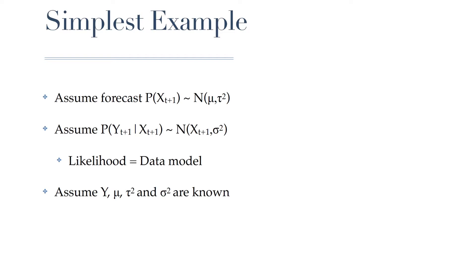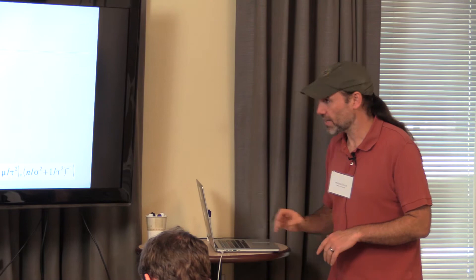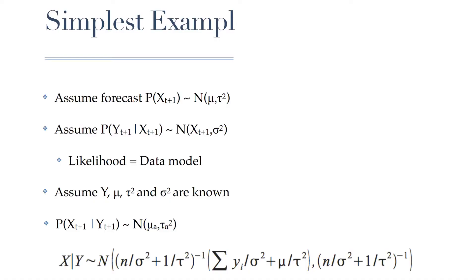That's our likelihood or data model. We'll assume our observations are known, the forecast mean and variance are known, and that the observation error has been reported—we're not trying to estimate it as we go. The only real unknown here is the state of the system that we're trying to update. This is a case of a normal prior times a normal likelihood—a conjugate combination that has an analytical solution. If you read chapter five where I introduced Bayes, there's a box with the derivation of normal times normal as an example of conjugacy.